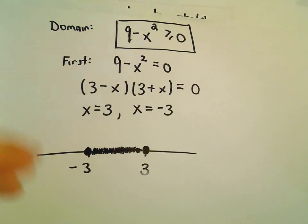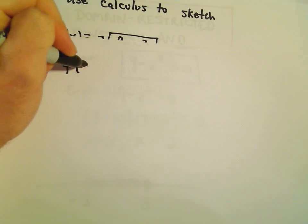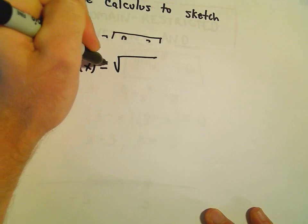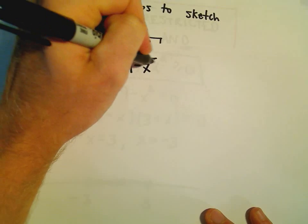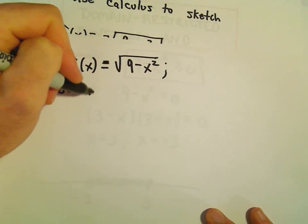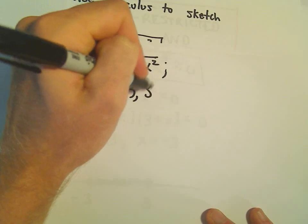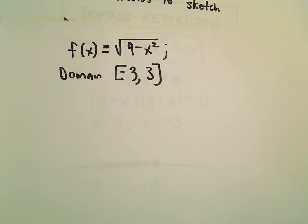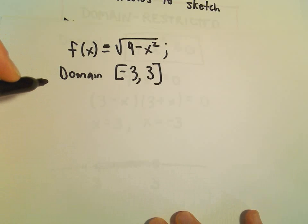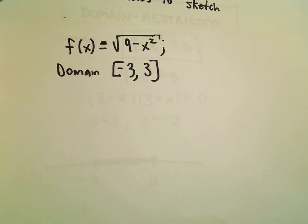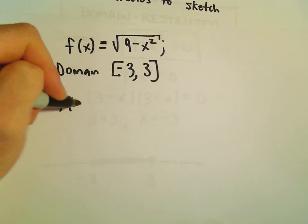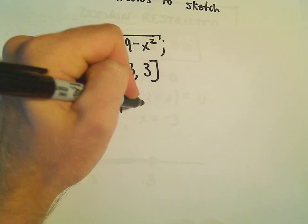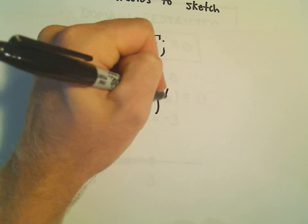So now we've got the domain of our function. Calling it f of x, we have f(x) equals the square root of 9 minus x squared, and the domain is from negative 3 up to positive 3, inclusive. Now I'm going to think about intervals of increase and decrease, and whether there are any local maximums or minimums. I'll rewrite this as (9 minus x squared) raised to the 1/2 power.